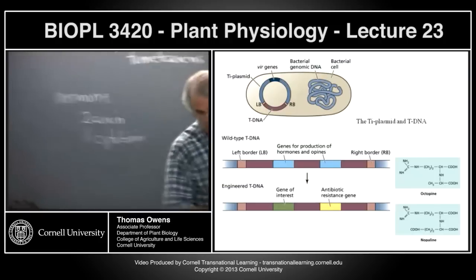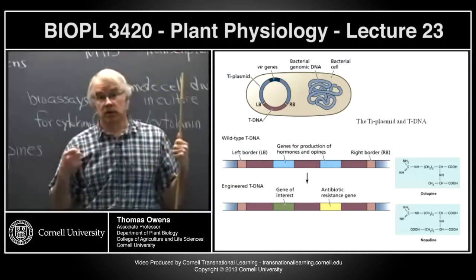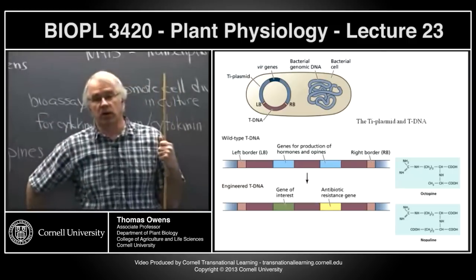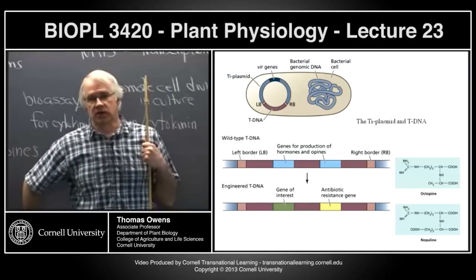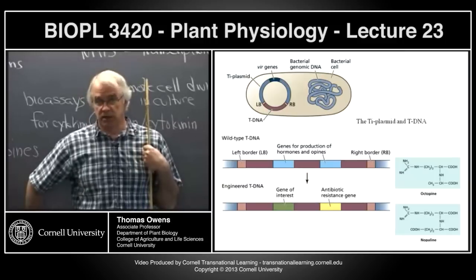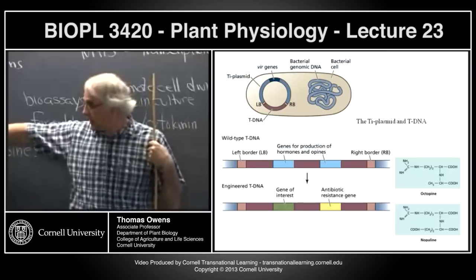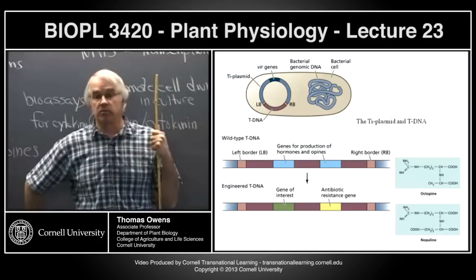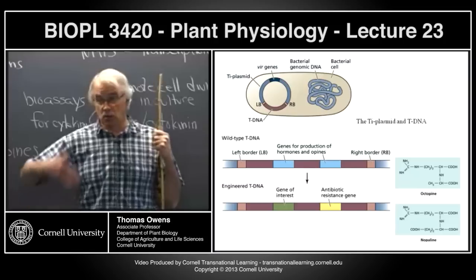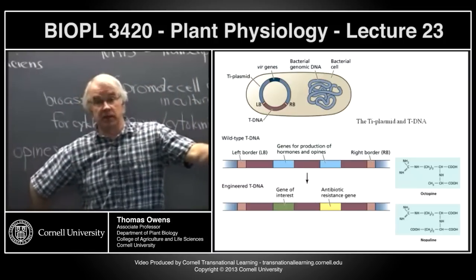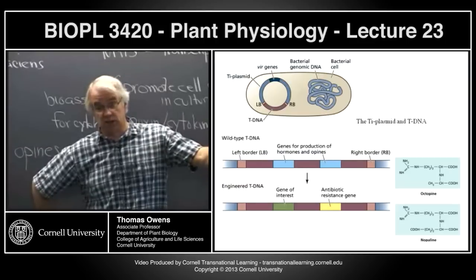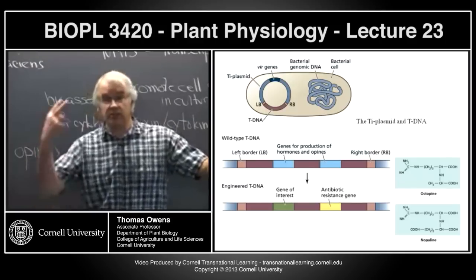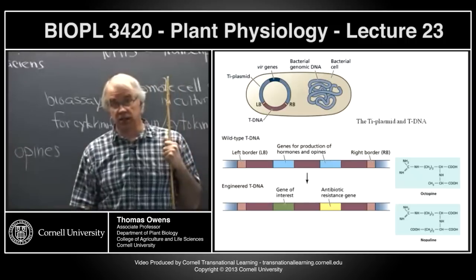The key thing from understanding crown gall is that both auxin and cytokinin are required for cell division. The current textbook has de-emphasized the synergistic role that auxin and cytokinins play — but all cells that divide require both. The emphasis now is more on the antagonistic effects between auxin and cytokinin, for example in controlling root and shoot development.